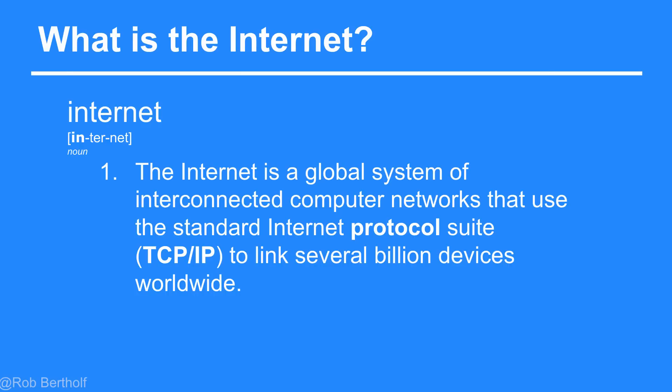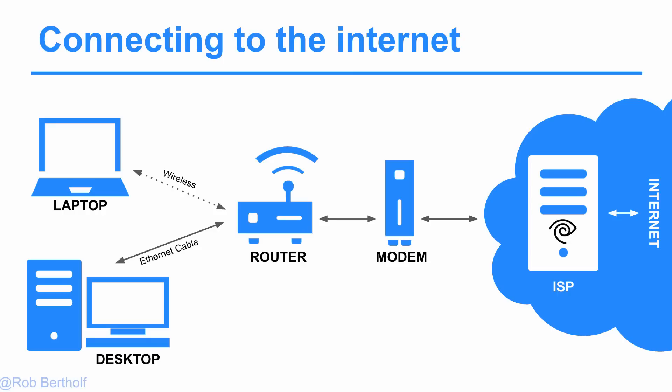Most of us know what the internet is. In its simplest form, it's just a bunch of computers all connected together sharing information. We don't always fully understand how we connect to the internet, so here's a basic graph. In its basic form, we're either on a laptop using a wireless connection, or on a desktop with a hard wire, and that goes to a router. The router is connected to a modem — oftentimes a router can also be a modem in one box — and that connects to your internet service provider.